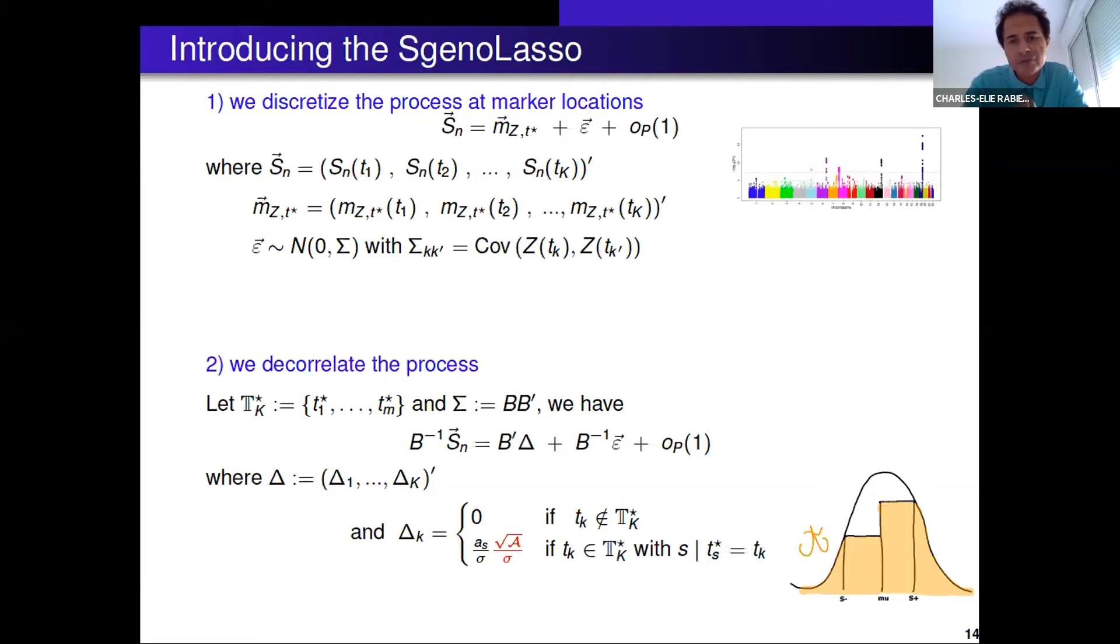I write my linear model using our theoretical results. What you can see is that delta is the vector containing the signal and there is a right factor here, the right A that shows up. It's a factor linked to selective genotyping. It's represented here, the orange surface below the Gaussian density, so it's linked to the fact that some genotypes are missing.